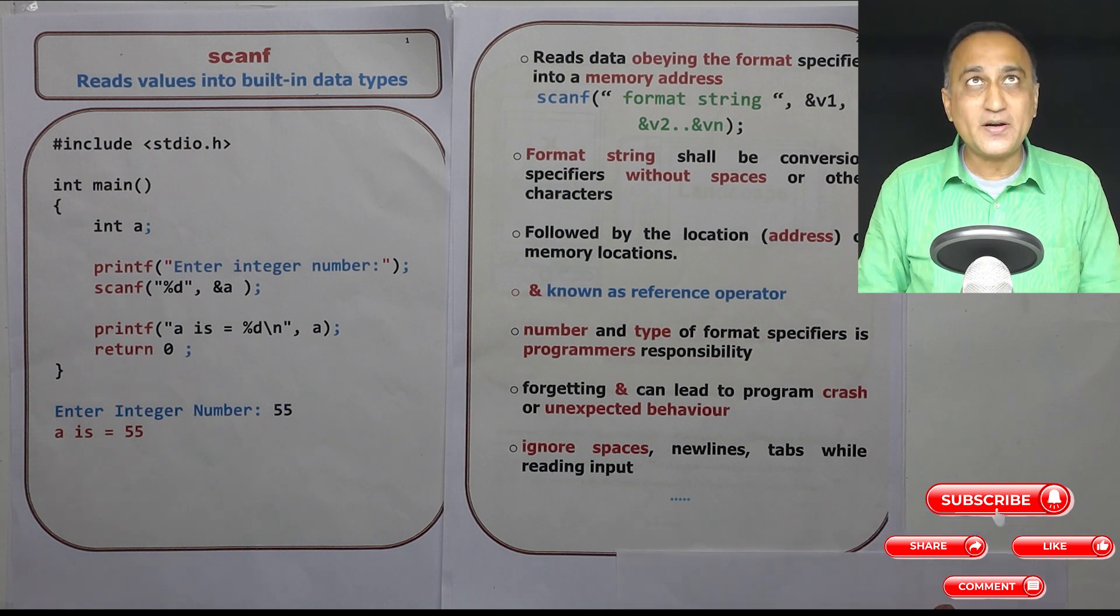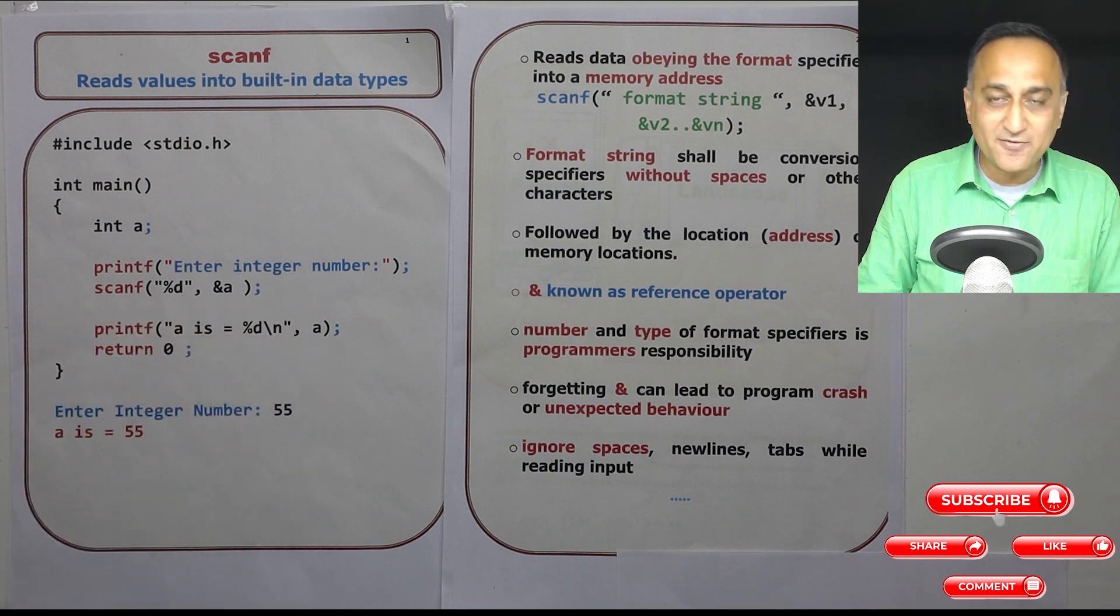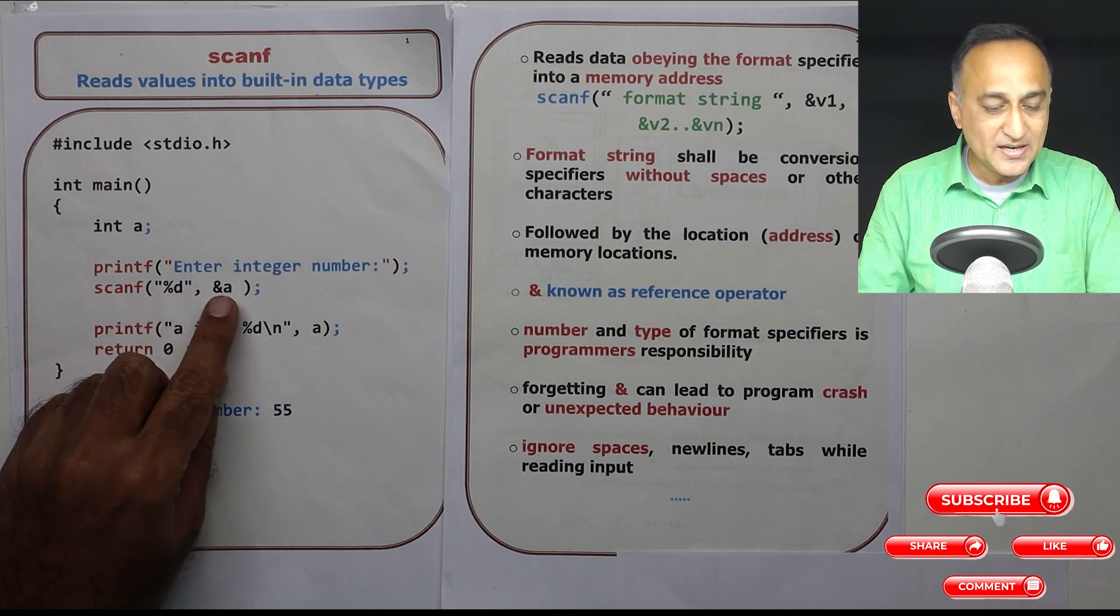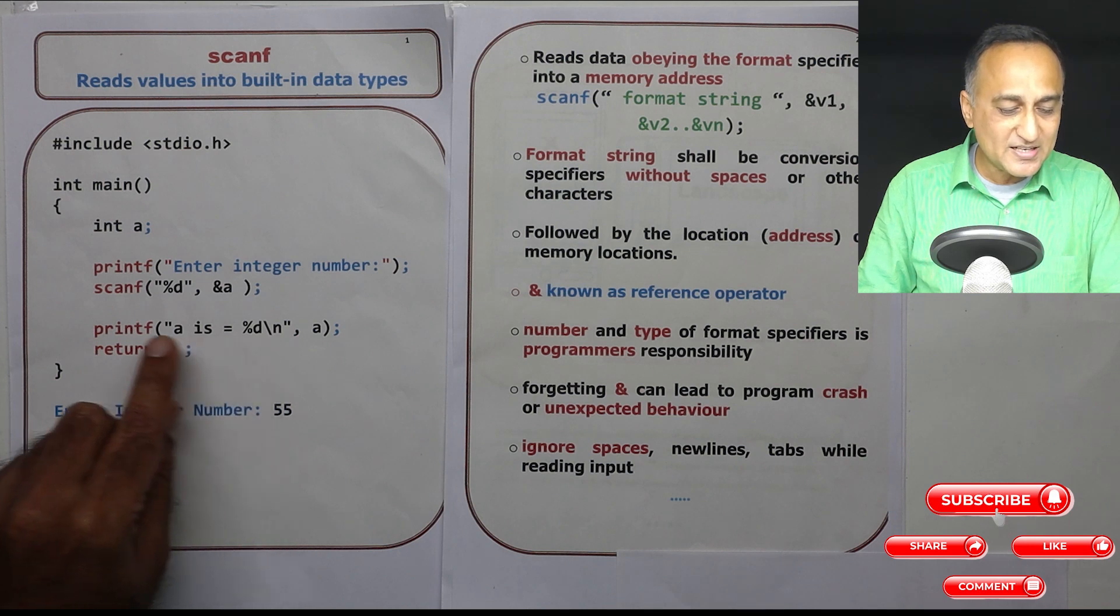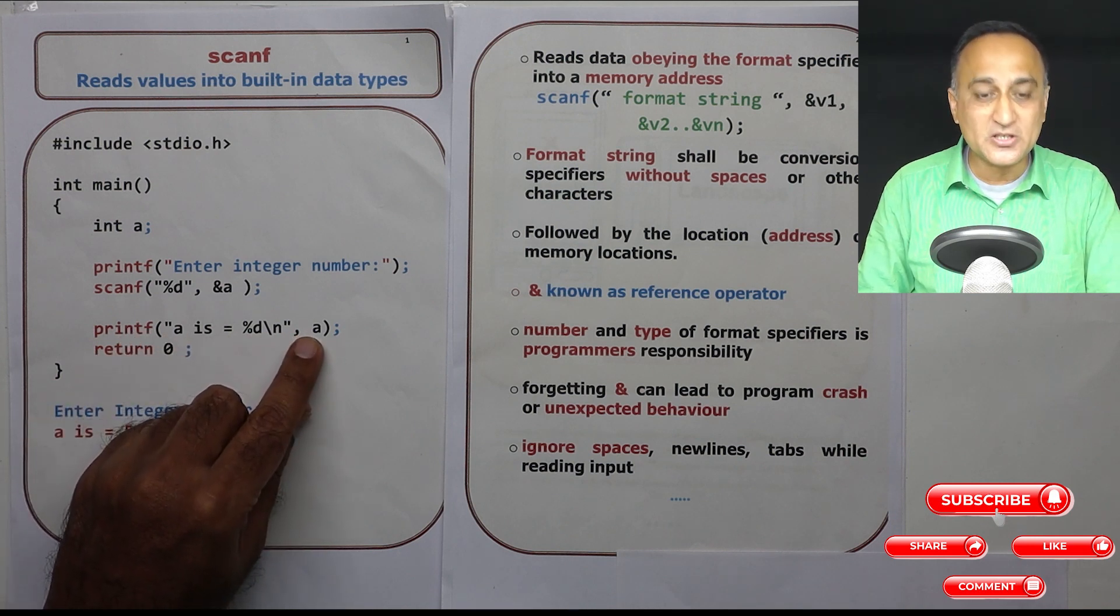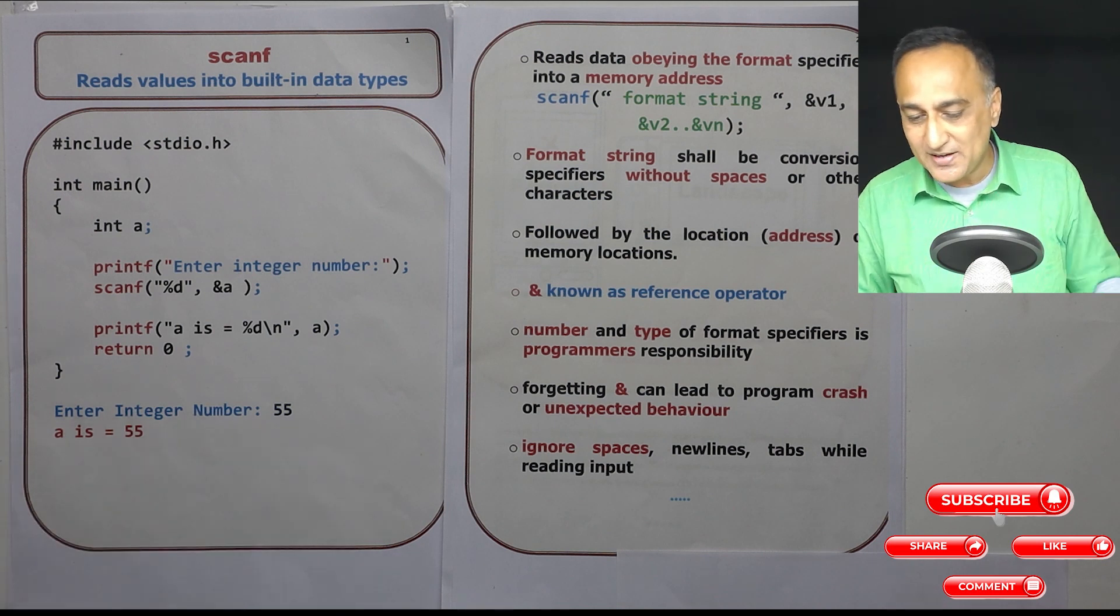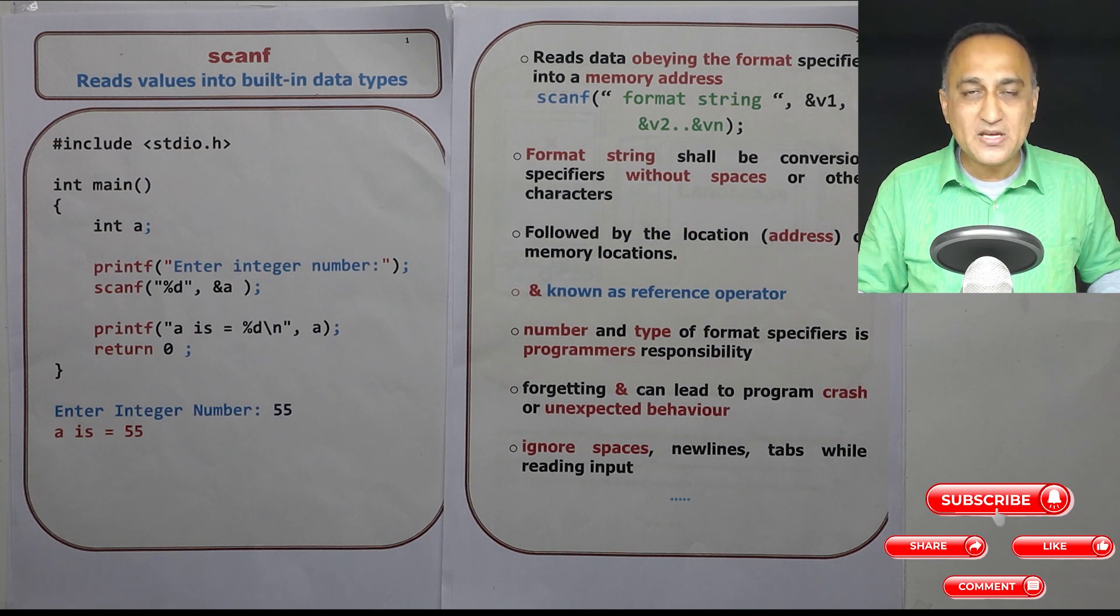So I hope you have understood the gist of scanf. Anything within the double quotes is known as the format or the control string. %d is the conversion specifier to indicate the data type of a. Here when I am printing, %d indicates I am printing a which happens to be an integer. %f would have indicated that it would have been a real or floating point number. So I hope this clarifies your understanding of how we read data into the computer's memory using scanf in C programming language.